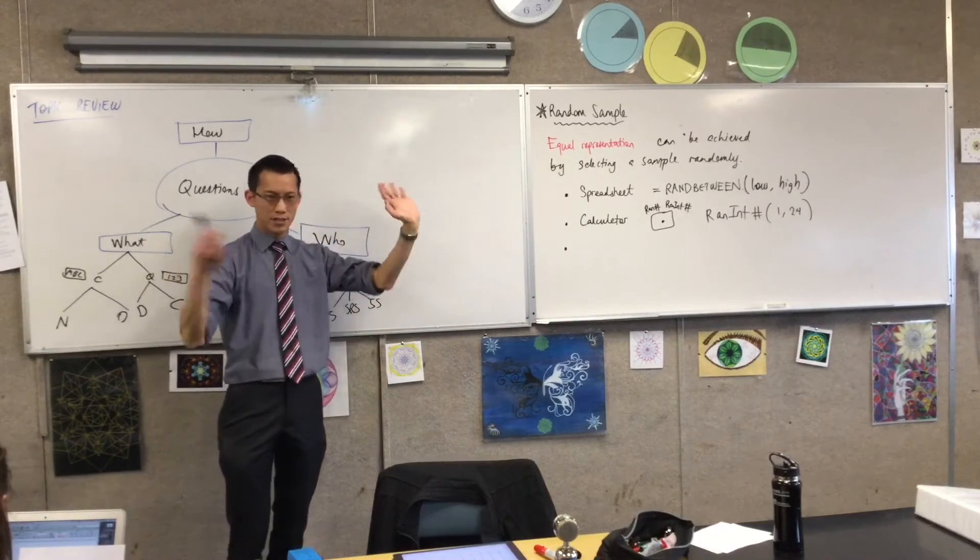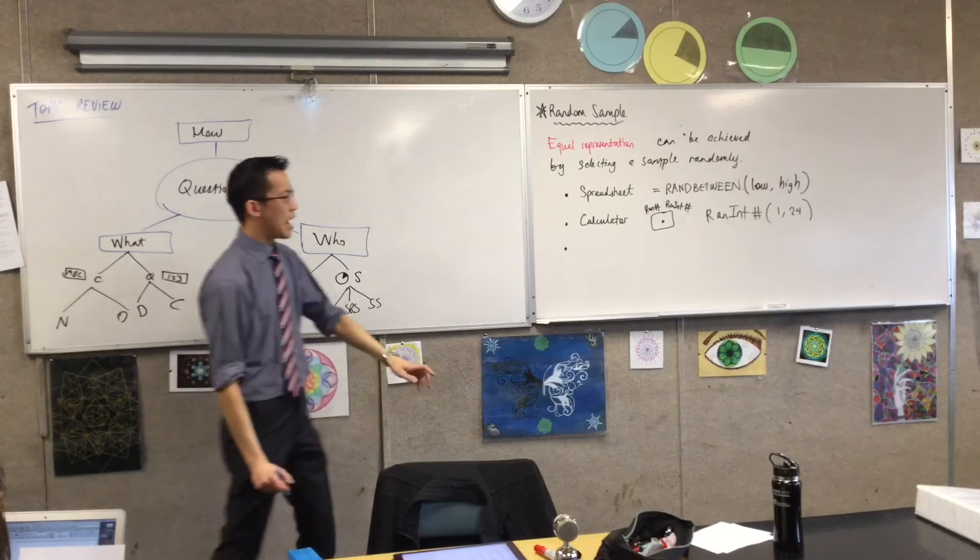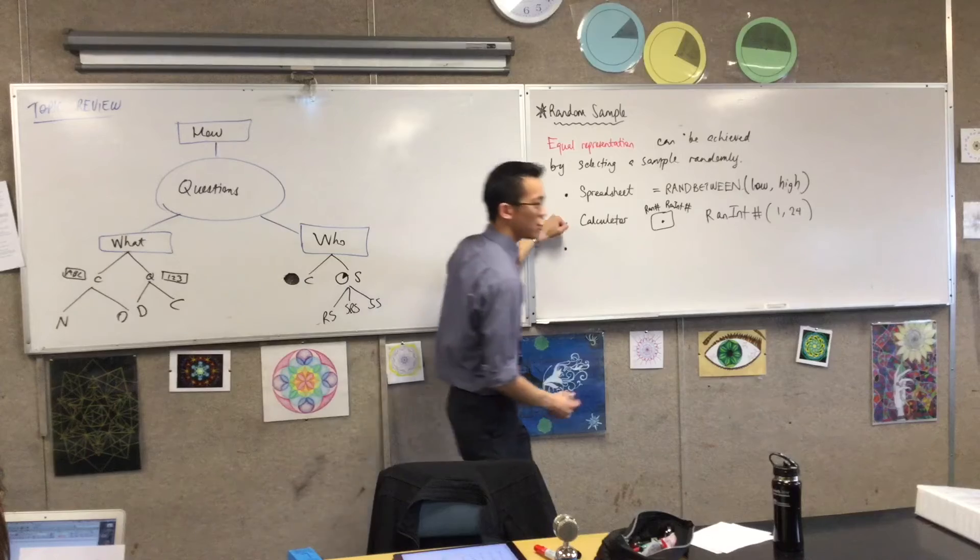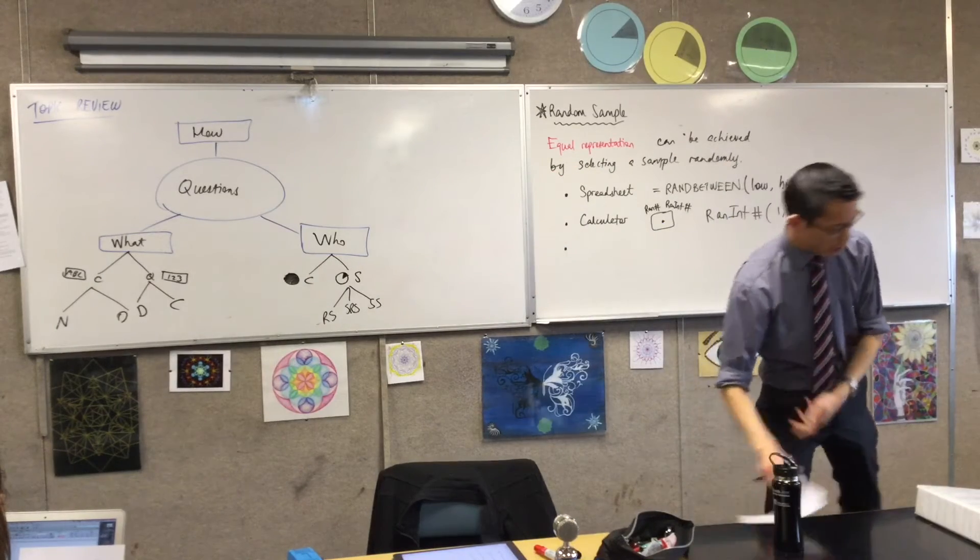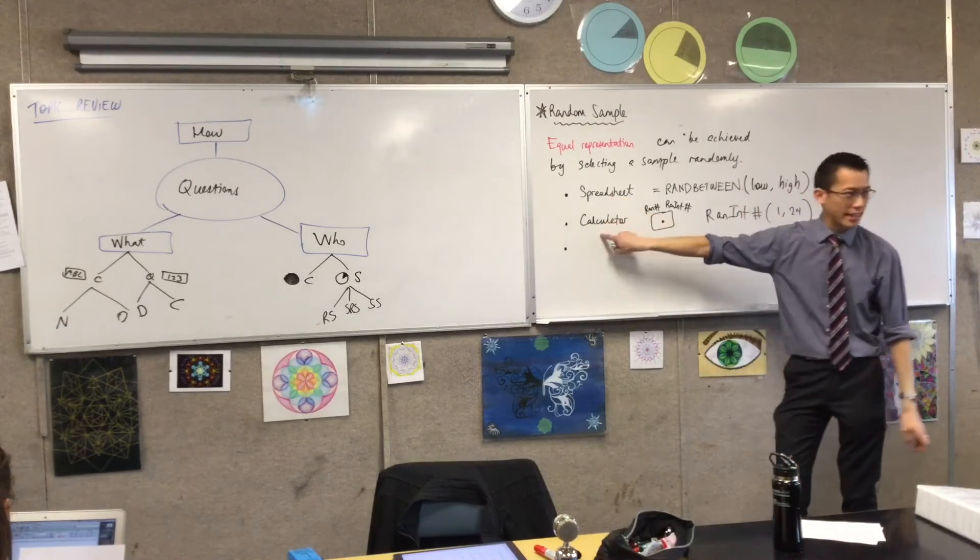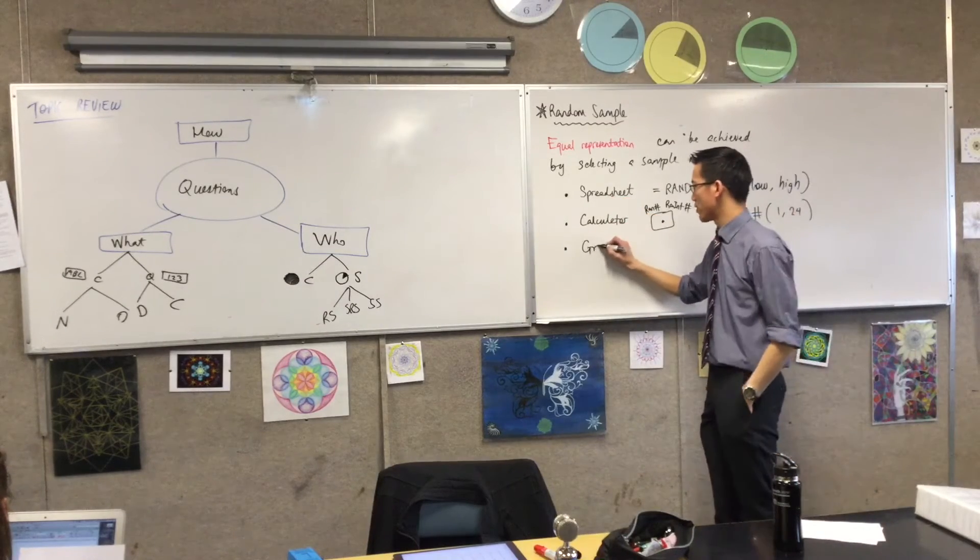I guess you would take the first four, or first five I said, that's what I wanted. So you can use a spreadsheet, you can use a calculator. There's one last way that I want to show you, and it has to do with this piece of paper. So spreadsheet calculator, option 3, grid of numbers.